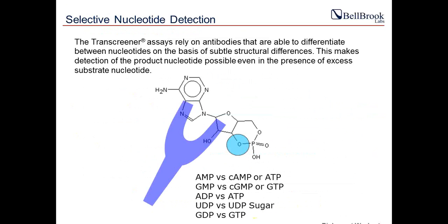The ADP antibody has about 150-fold selectivity. Differentiation between closely related nucleotides with subtle structural changes is central to the technology, as it allows detection of the enzyme product — for example ADP — in the presence of excess ATP. This is a primary requirement for measuring enzyme initial velocity. All four Transcreener assays generate a Z-prime value greater than 0.7 at substrate conversion levels of less than 10%, even far lower, over the full range of initial substrate concentration.